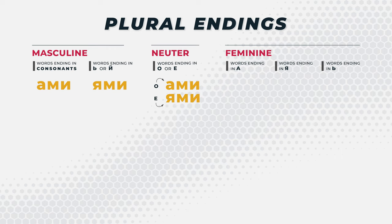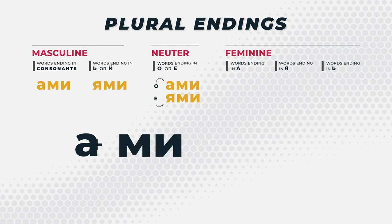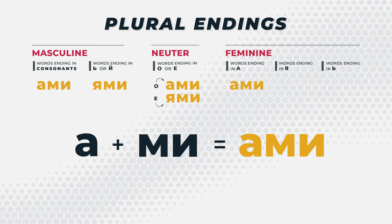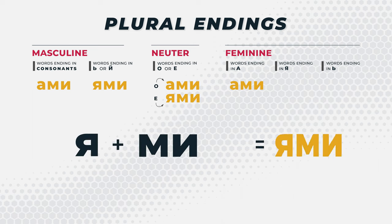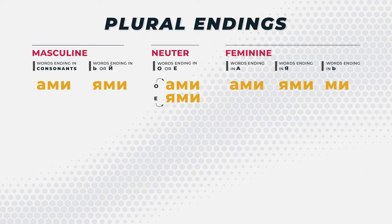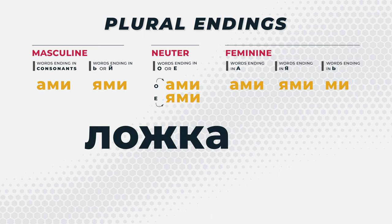Feminine is pretty easy as well because those feminine words ending in A keep their A ending — you just add the MI ending, AMI. And those feminine words ending in YA keep their YA and just add the MI, going to YAMI. Let's take the word lojka again. If we wanted to put spoons into the instrumental plural, we would say lojkami. You see how it ends in an A — it keeps its A, and we just add the MI letters.